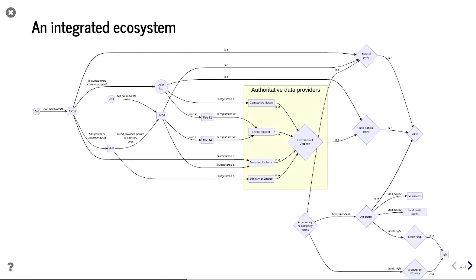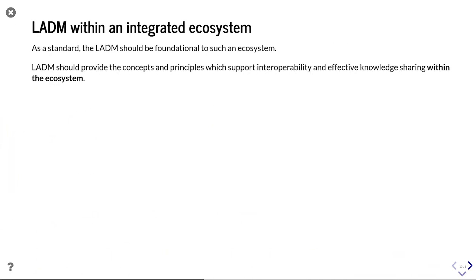We can see how all of these agencies come together to work cooperatively, creating an integrated ecosystem. For Title 14, which is owned by JND1 — a natural party — they can transact on Title 14. But there's also a power of attorney between JRD1 and ARB1, managed by the Ministry of Justice, meaning that ANT also has the power to transact on Title 14 through the power of attorney. As a standard, LADM should be foundational to such an ecosystem, providing the concepts and principles that support interoperability and effective knowledge sharing within that domain.